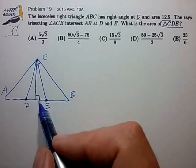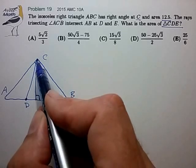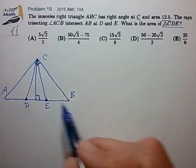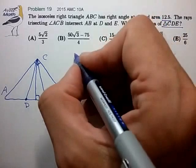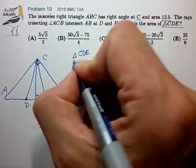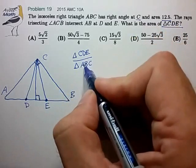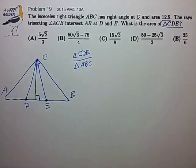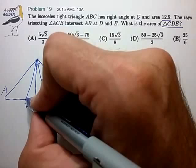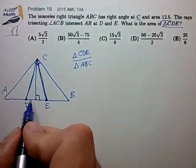So it looks like we're trying to find out what the ratio of triangle CDE is to triangle ABC. That's really the critical ratio that we're trying to solve for here: CDE over ABC. And once we know that ratio, we can then just multiply by 12.5 to get our final answer.